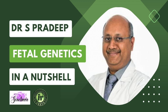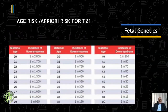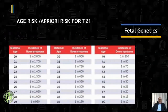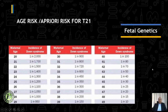Any woman who is pregnant is at risk of having a fetus with aneuploidy, and this risk is called a background risk or a priori risk. According to maternal age, we have tables which tell us at a particular age what is the risk for a woman to have a fetus affected with trisomy 21.